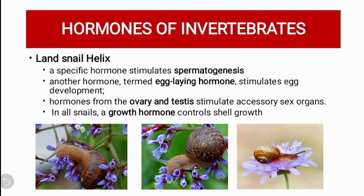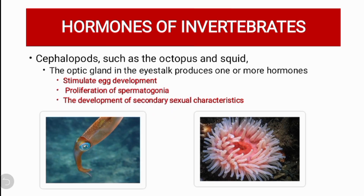The land snail Helix produces a specific hormone for spermatogenesis — testosterone — and another hormone, an egg-laying hormone, that stimulates egg development. Hormones from the ovaries and testes stimulate accessory sex organs. In other snails, a growth hormone controls the growth of their shell.